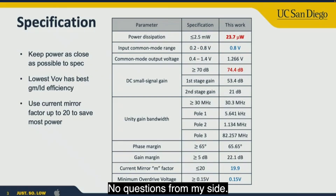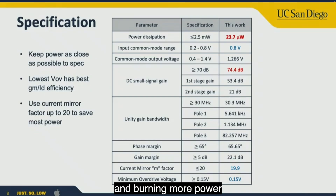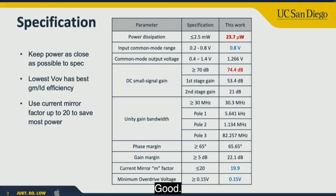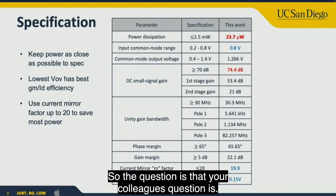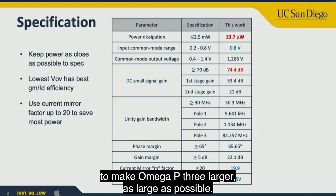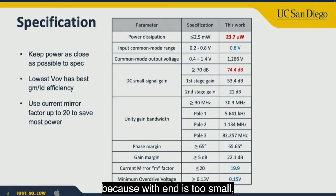The presentation focused on optimizing power by burning more in the output stage rather than the input stage, which helped achieve the low power result. Regarding the audience question about M9 sizing: we used minimum width and length to minimize the parasitic capacitance C1 and push omega_p3 as large as possible. However, a concern was raised that a very small M9 width and length may introduce noise issues.